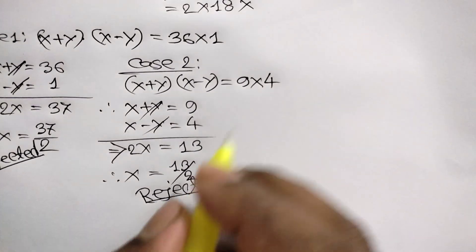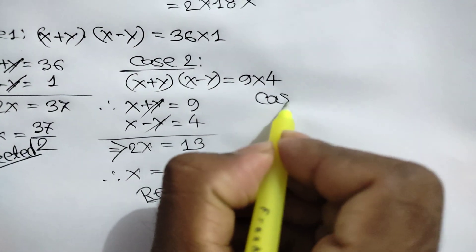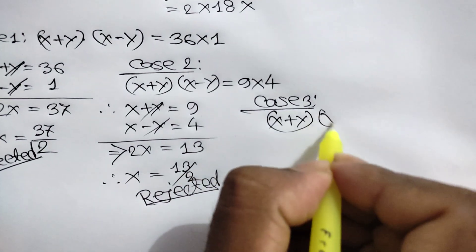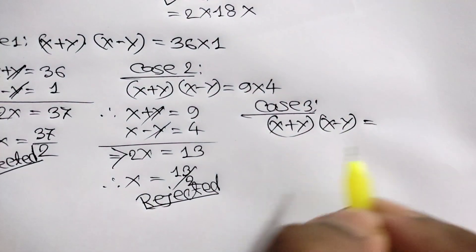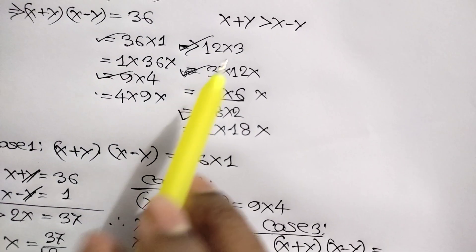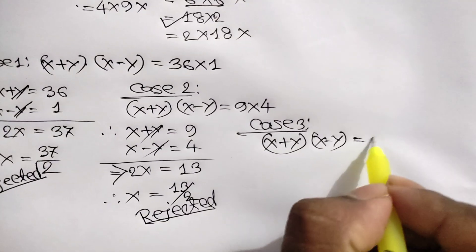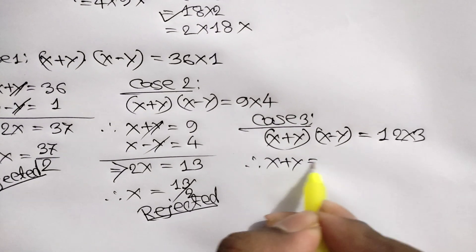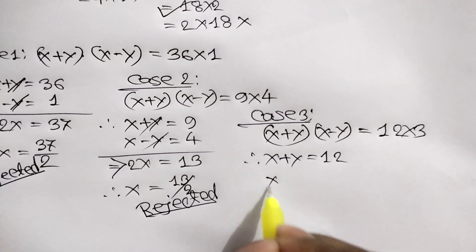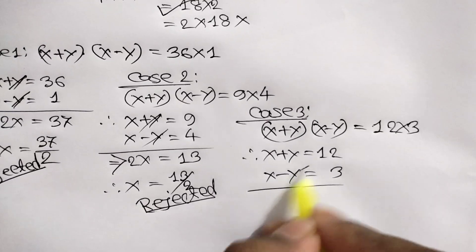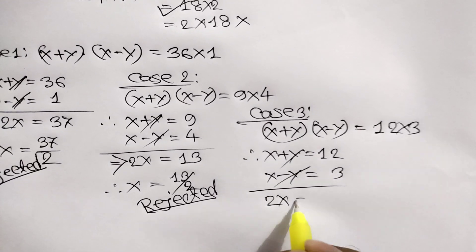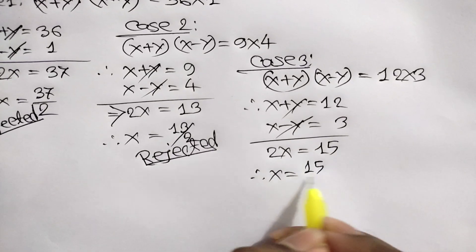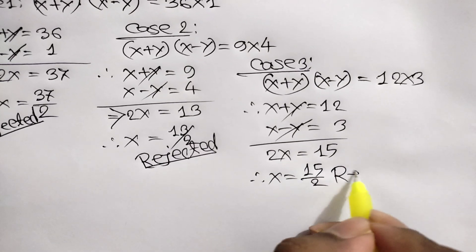Case 3: x plus y times x minus y is equal to 12 times 3. So x plus y is equal to 12 and x minus y is equal to 3. Similarly, here we get 2x is equal to 15, or x is equal to 15 over 2, but this is rejected as it is not a natural number.